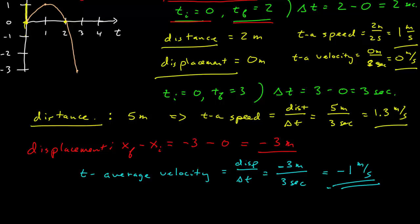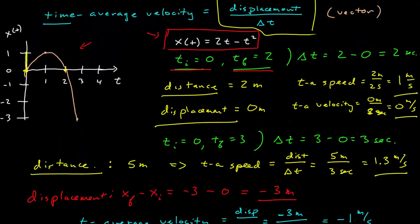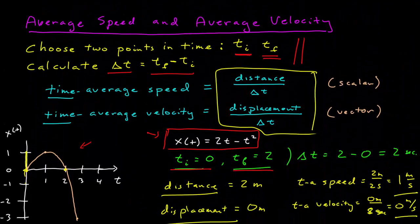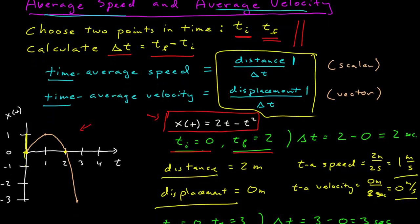So you'll never get one of these wrong again. These are a source of a great many trick questions, so always have your guard up when you encounter average velocity and average speed. Take great care to find your distance and your displacement, know what those mean and the differences between them, and then after you find the time interval, you can calculate either the time average speed or velocity.